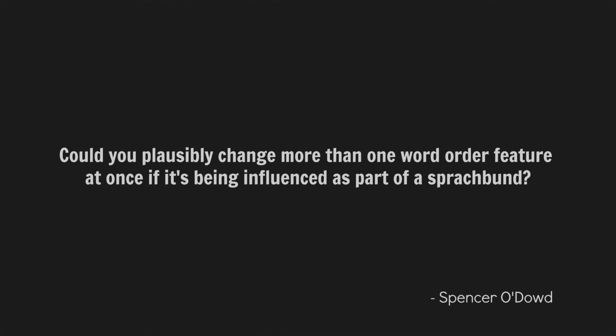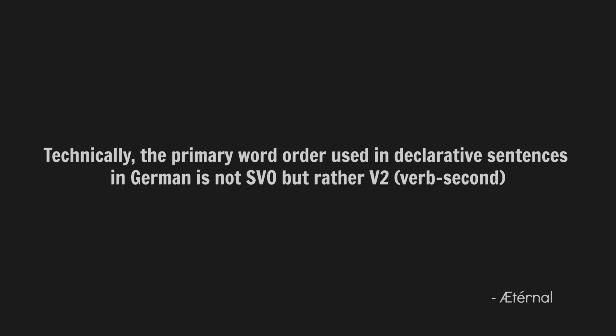Could you plausibly change more than one Word Order feature at once if it's being influenced as part of a Sprachbund? I didn't read anything to this effect in the research for the video, but it makes sense to me. For anyone who doesn't know, a Sprachbund is kind of like a linguistic area where a number of languages share features because of their geographic proximity. So yeah, it makes sense to me. I think it could work.